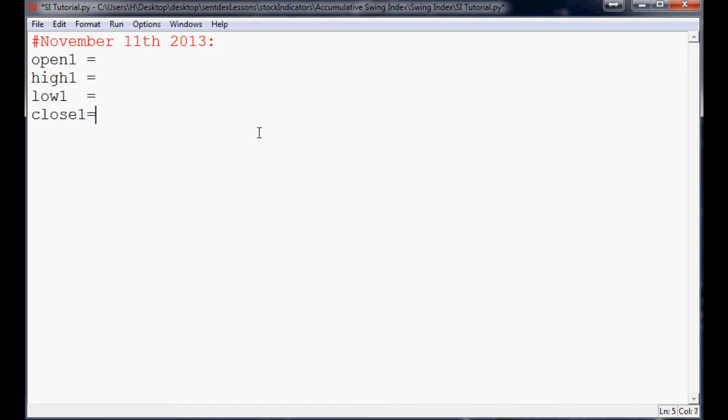So we need two days worth of prices, right? You need open, high, low, close from two different days. So here, just as an example, we'll call this November 11th, 2013. And let me move the keyboard a little bit. There we go. And here we're going to have open one equals something, high one equals something, low one equals something, and close one equals something.